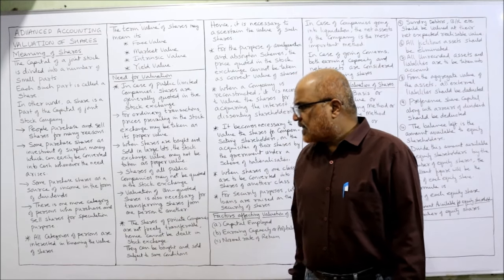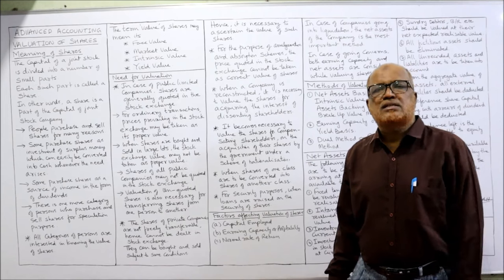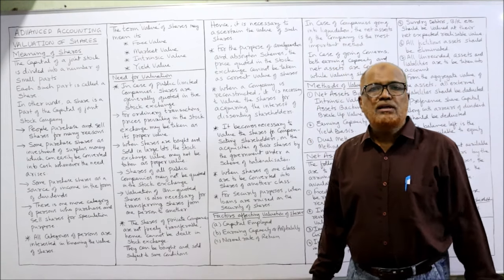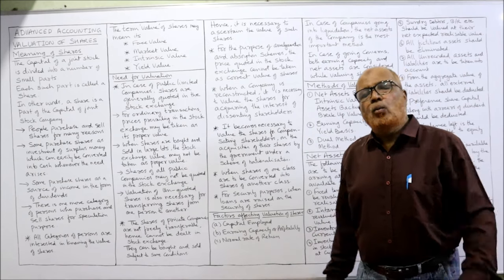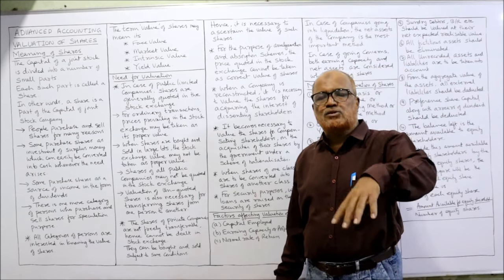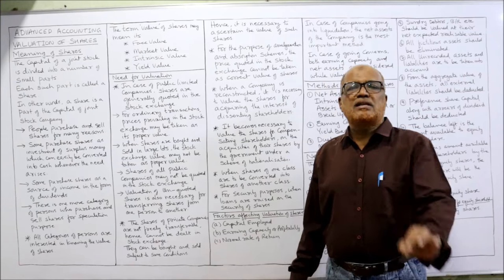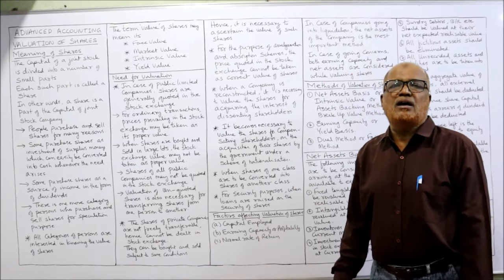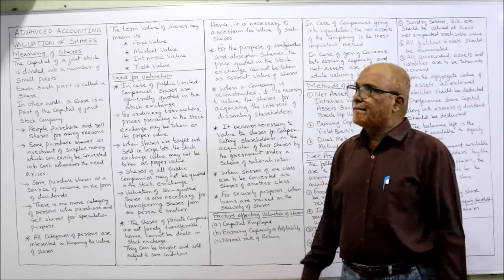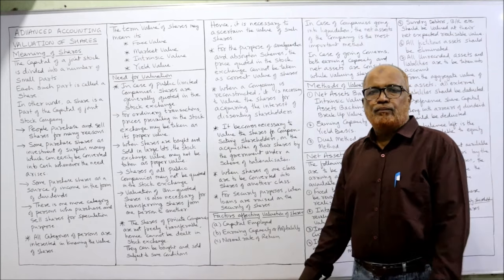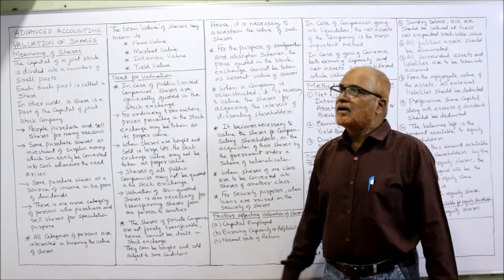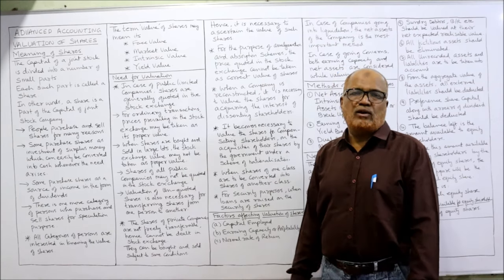All these categories of persons — investors and speculators — are interested in finding out what is the value of the share. Every investor, whether investing to get a return or speculating, is interested in finding out what is the value of the share. Now, the term 'value' means four types.